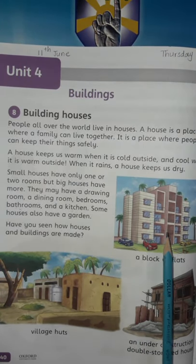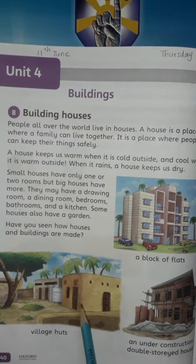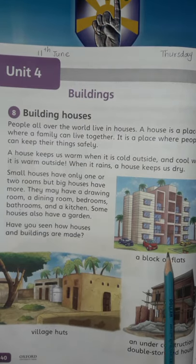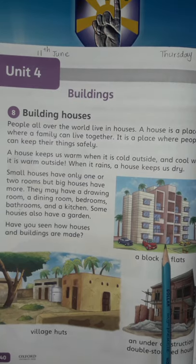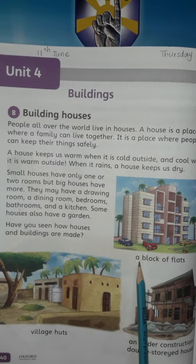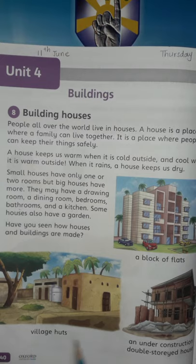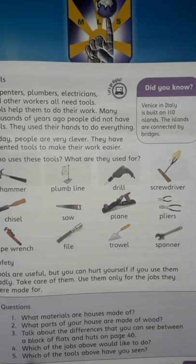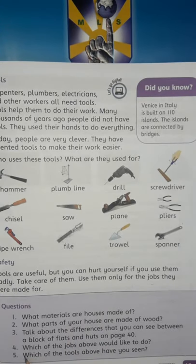A block of flats is made of concrete and cement, while a village hut is made of mud. A block of flats uses more materials — wood, concrete, and other things — while village huts are more simple and use less material. Students, we have discussed all these questions orally; we'll do them in a notebook later. Thank you.